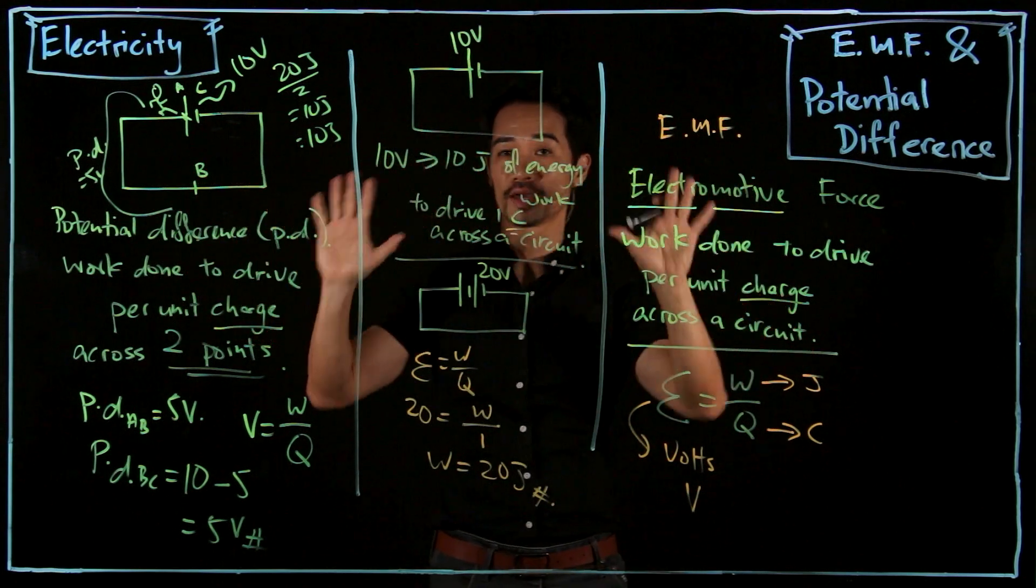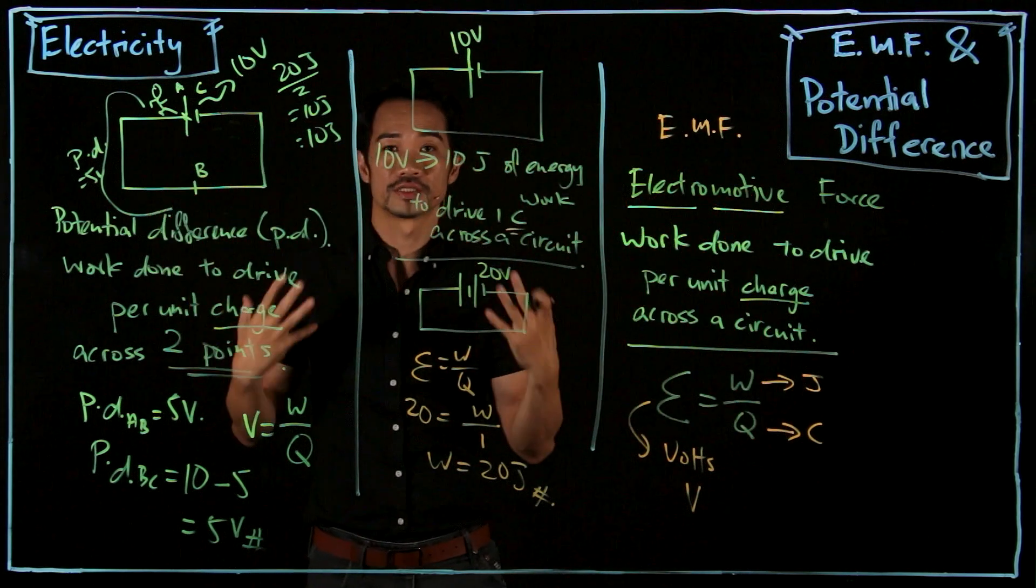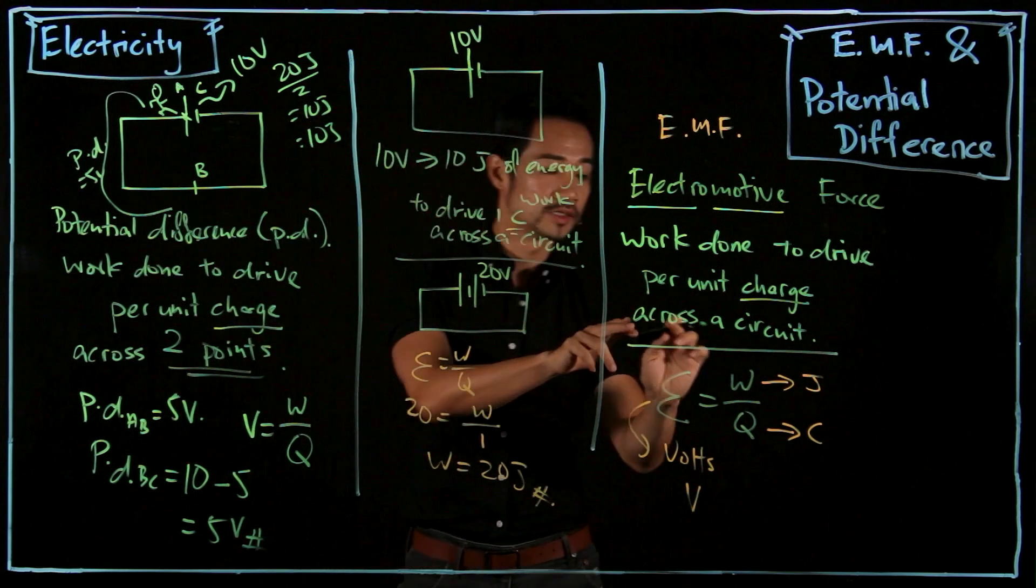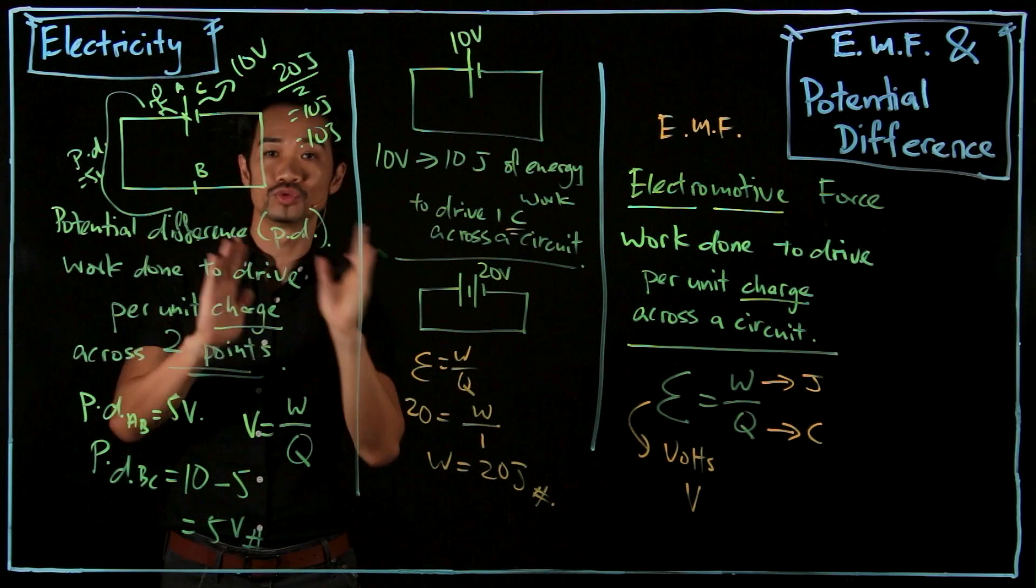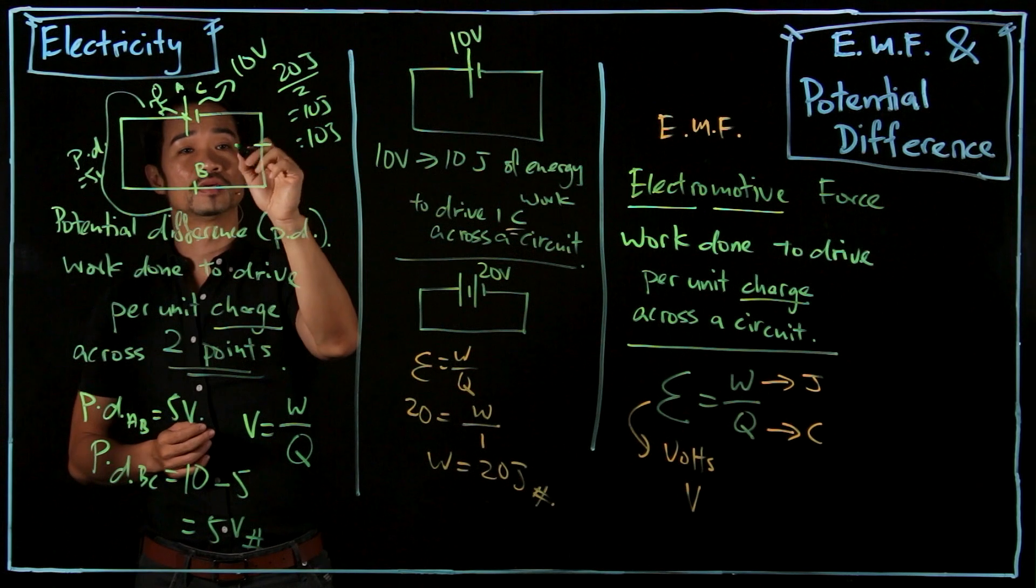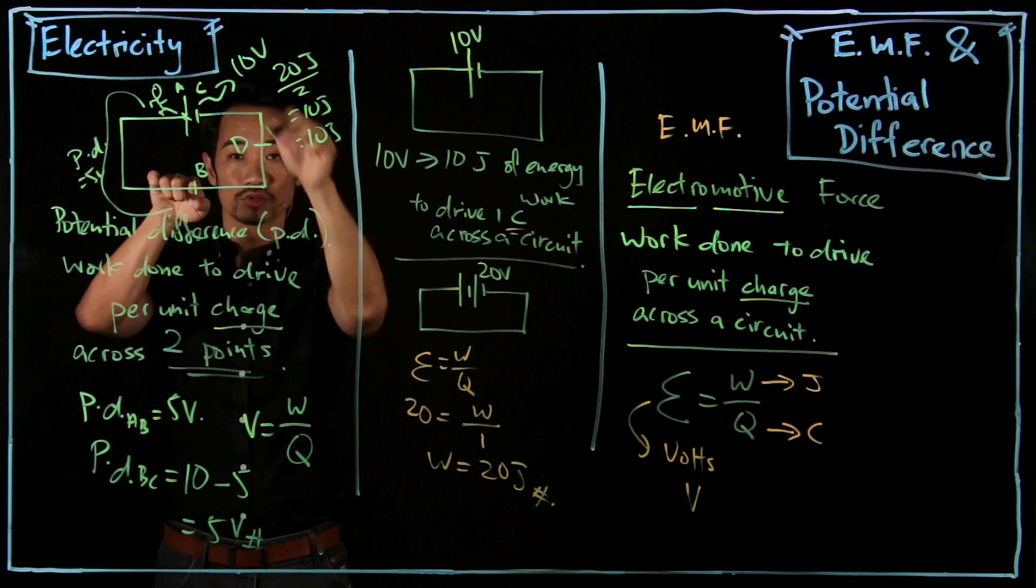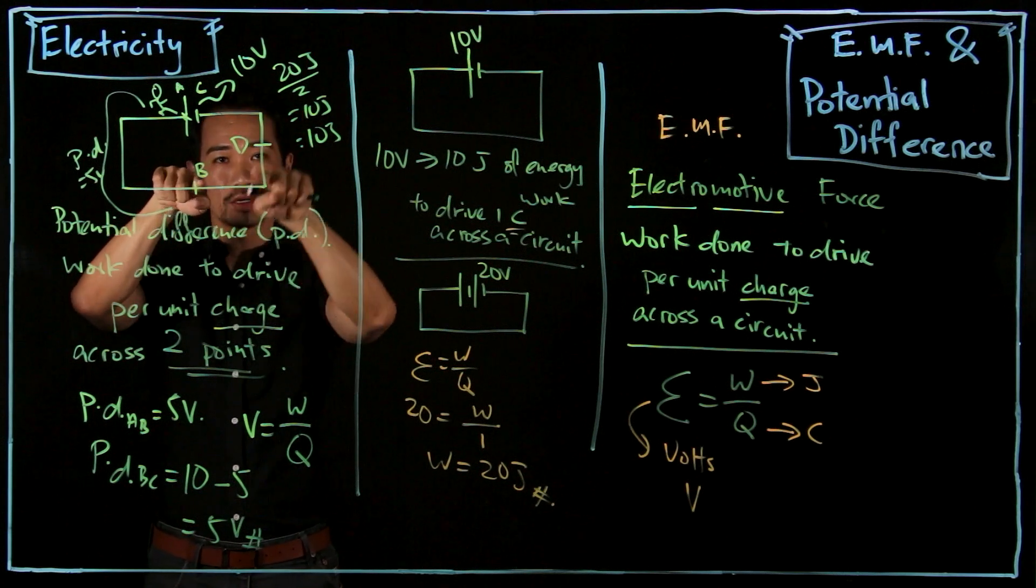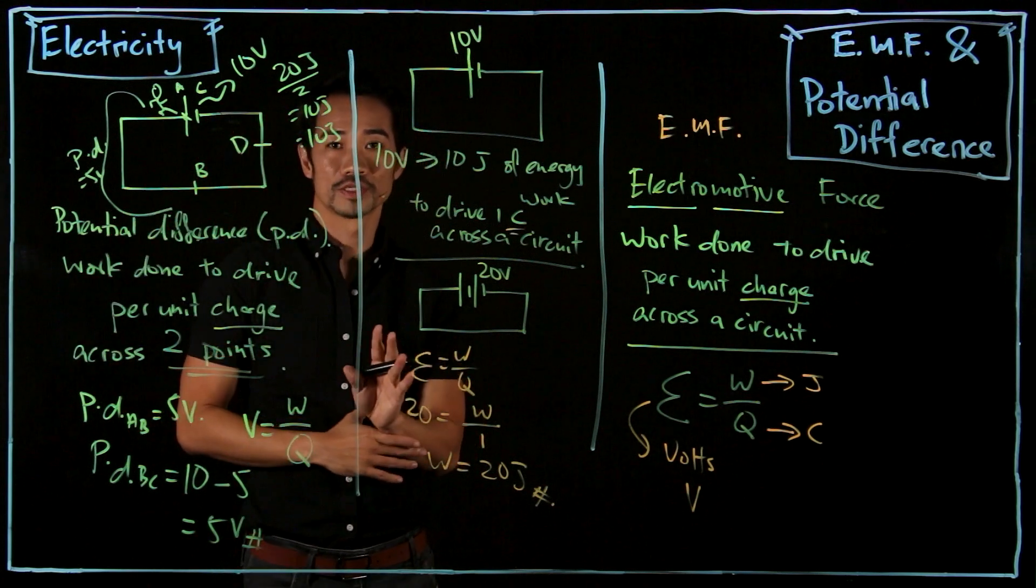So I hope you get the concept. Both EMF and potential difference are about the work done to drive charge. The main difference is this is across the entire circuit, this is across any two points. So I can have a potential difference from here—let's say I can call this maybe D—and then if this is totally half, then most likely if this is 5 volts, then here half will be just 2.5 volts. We'll elaborate more on this concept in the later chapters.